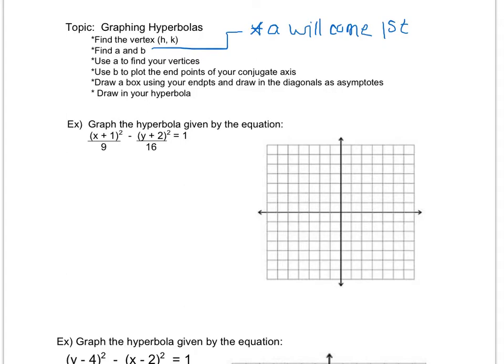So let's look at the first one. First thing I'm going to do is find (h,k). I can see that it's x plus 1, which was originally x minus a negative 1. So I'm going to have an h value of -1 and a k value of -2. This is going to be my center.